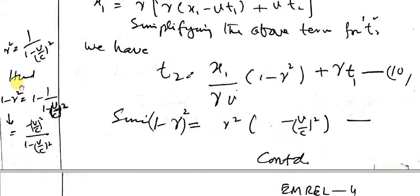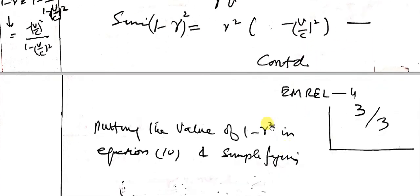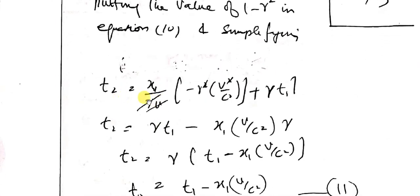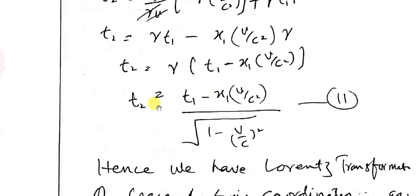Here gamma squared equals 1 over (1 minus v/c whole squared), so 1 minus gamma squared equals 1 minus 1 over (1 minus v/c whole squared). Multiplying and subtracting, the 1s cancel, leaving in the numerator minus v/c whole squared over (1 minus v/c whole squared), which equals gamma squared times (minus v/c squared). Putting that value into equation 10 and rearranging and simplifying, we get t2 equals (t1 minus x1·v/c squared) divided by (1 minus v/c whole squared).